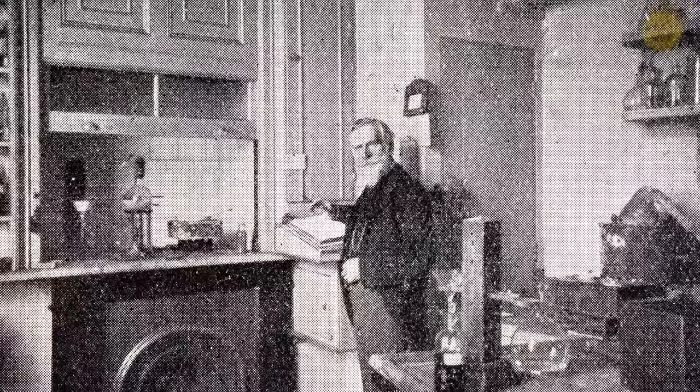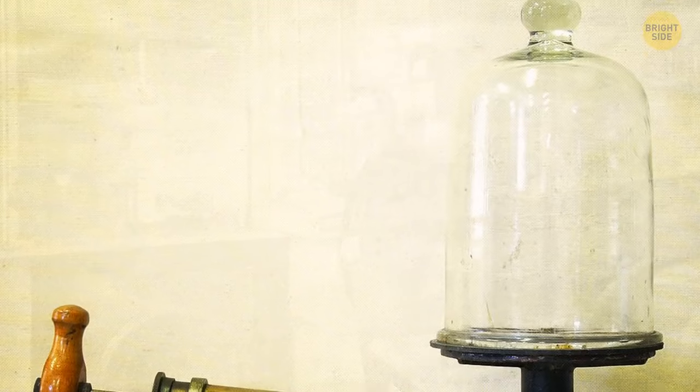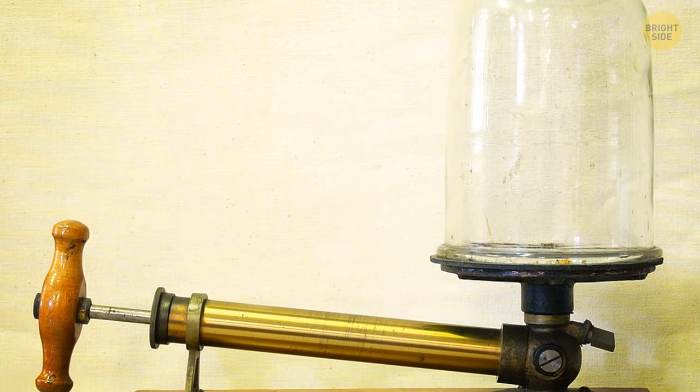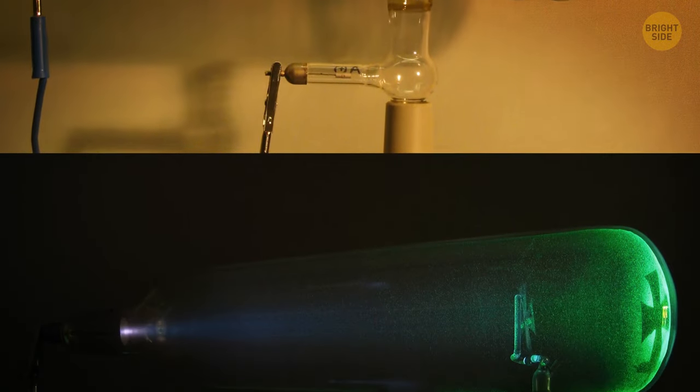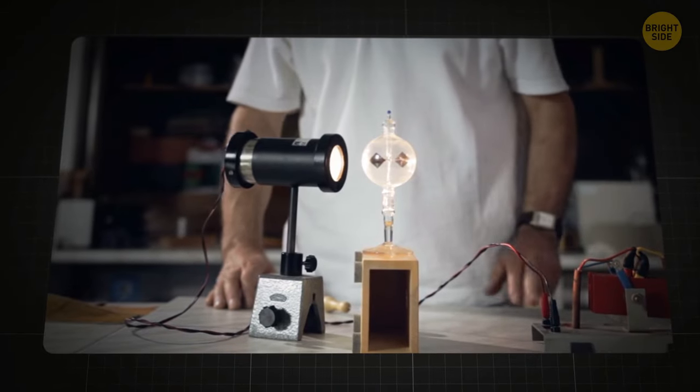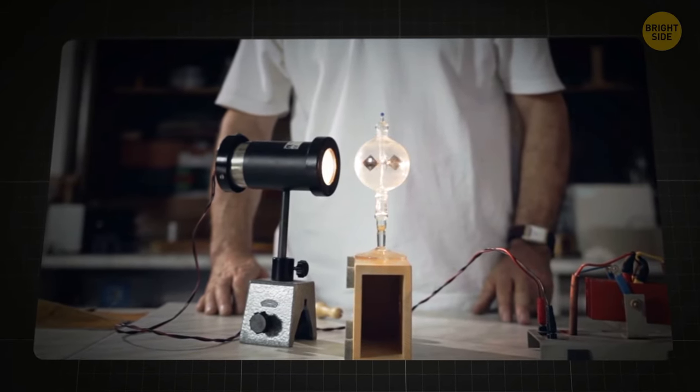Crookes never intended to construct this device. He initially wanted to precisely measure weight. The scientist used the vacuum to minimize any interference from air currents. An odd thing happened. Every time sunlight shone directly on the measuring instrument, the readings changed.